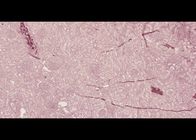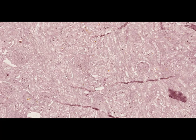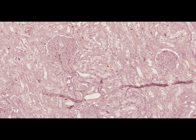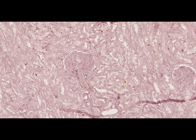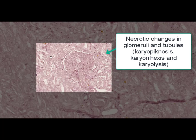At high magnification in the zone of ischemic necrosis, we can observe morphological features of cellular necrosis both in the glomeruli and in the tubules. These changes include karyopyknosis, karyorrhexis, and karyolysis. Similar changes can be seen in the cytoplasm. Mainly, cells have no nuclei as those nuclei were dissolved or lysed.